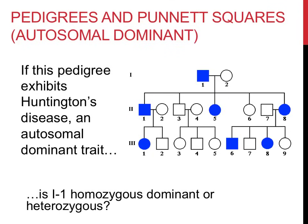The third question asks: is Roman numeral 1-1 homozygous dominant or heterozygous for this trait? After identifying who you're talking about, the first step is to look at his children. If he were homozygous dominant, he could only pass on dominant alleles, and every one of his children would be expected to have this disorder. Two of his children — Roman numeral 2-3 and 2-6 — don't have this trait, so it's safe to assume that this individual is heterozygous.